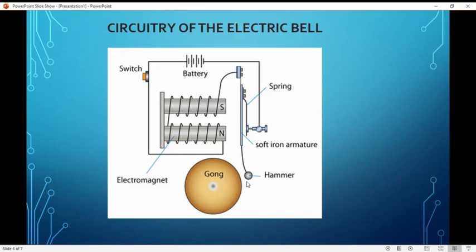Thereafter, the spring pulls the soft iron armature back to its original position on contact with the screw which then completes the circuit. Then, the electromagnet regains its magnetism and the above process is repeated until the switch is closed.